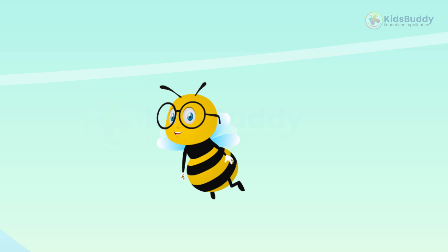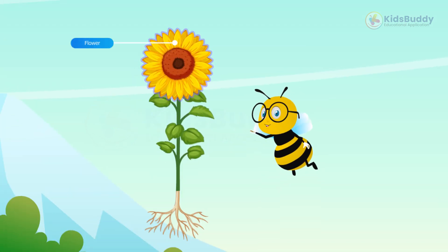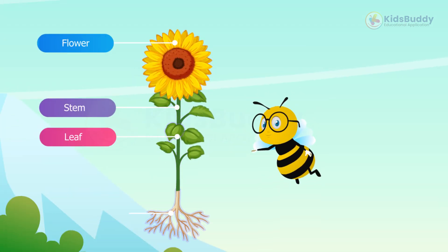A plant has different parts, including the flower, stem, leaf, and roots.